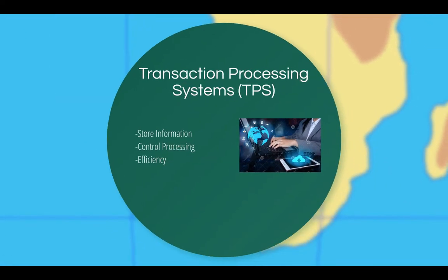Transaction processing systems, or TPS, collect and store information about transactions, and can control some aspects of processing transactions by using barcodes to identify a product, and a point of sale system to process the actual transaction of the purchase of the product. The primary purpose of a TPS is the efficient processing of transactions.